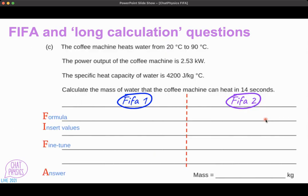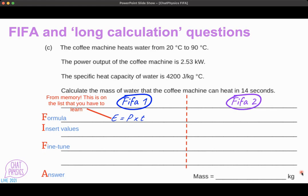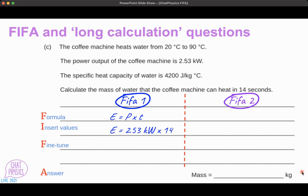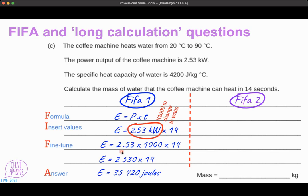So long calculation question. You split it in two. You call the two halves FIFA 1 and FIFA 2, hence FIFA 1-2. So we put in the formula. And this is one that students have to recall from memory. We put in the numbers. Now, notice that one of the values is in kilowatts. So part of a fine-tuning process is changing the kilowatts into watts. And if you do this explicitly and model it explicitly, you increase the chance that students are going to do this. So for FIFA part 1, we get this answer.